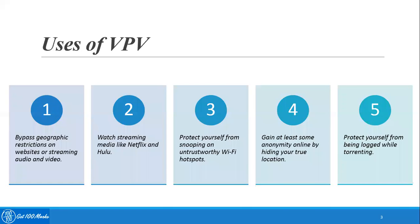Now let's understand the different uses of VPN. VPN helps us to bypass geographic restrictions on websites or streaming audio and video. This is a major reason why VPN has been used by some people for downloading movies and audios from torrents. VPN helps us to disguise our geolocation so we can go beyond geographic restrictions, and it also helps in watching streaming media like Netflix and Hulu wherever you are.